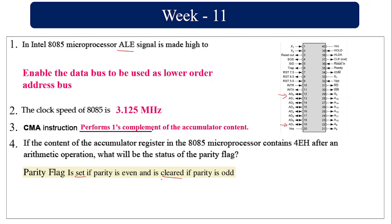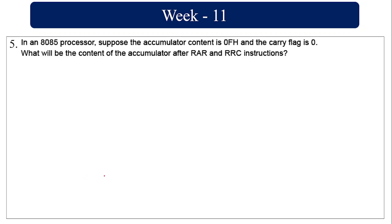The parity flag is set if parity is even, and cleared if parity is odd. 4E means 0100 and E is 1110, so the number of ones is 1, 2, 3, 4 — parity is even, so the parity flag is set.